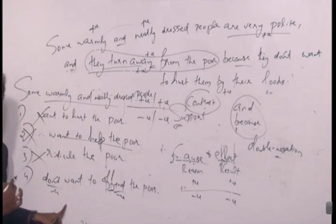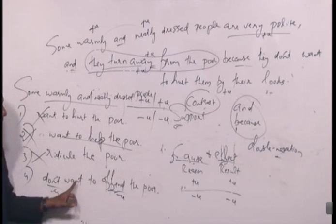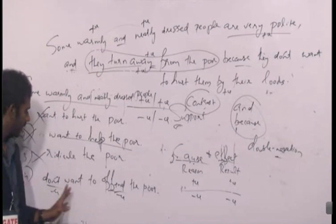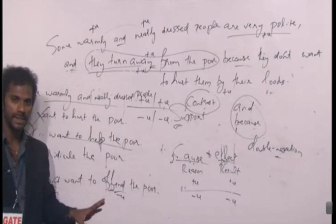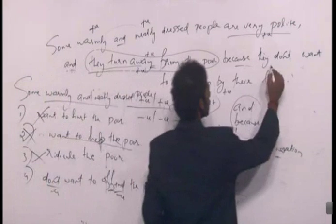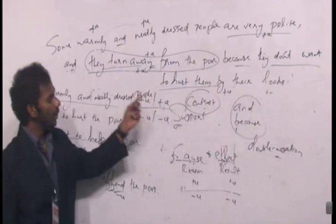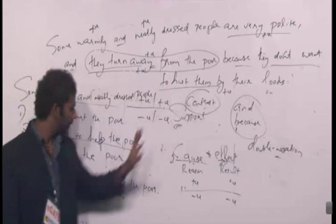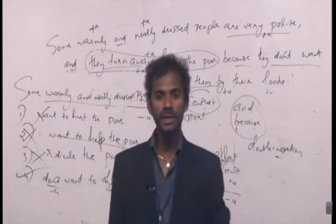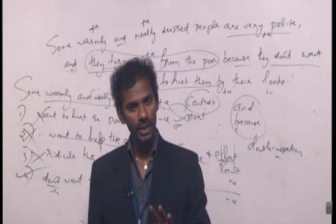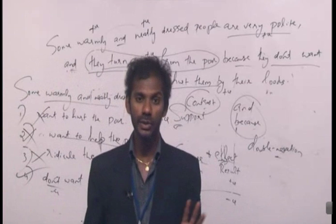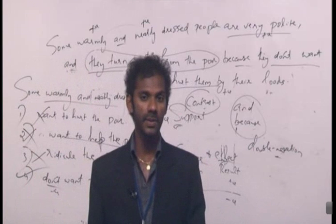Option 4 — 'don't want to offend the poor.' 'Offend' means to oppose or hurt, while 'defend' means to support. 'Don't want to offend the poor' — 'don't' is negative and 'offend' is also negative. Double negation makes it positive. 'Don't want to offend' is the same as 'don't want to hurt them' — which is given in the statement. So option 4 is the answer. Identifying the charge helps eliminate options. No imagination or general knowledge at all.